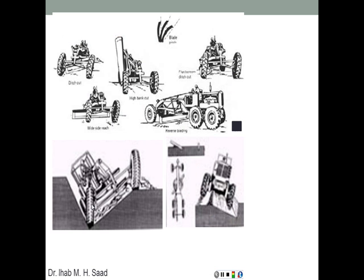Here it shows the two front wheels of the grader working on two different planes or two different levels, which is part of the versatility and flexibility of the grader. It also shows the blade working perpendicularly — in a vertical way — and here it shows it horizontally as well.